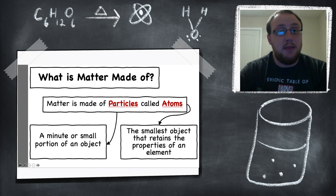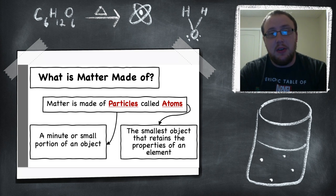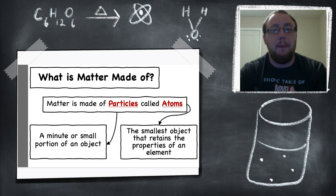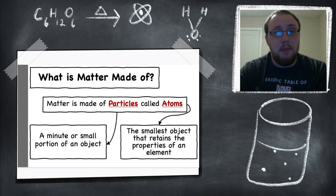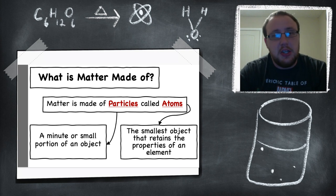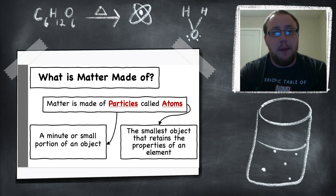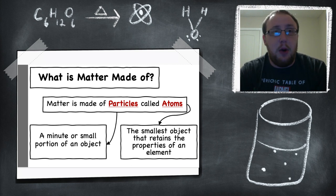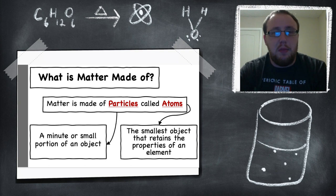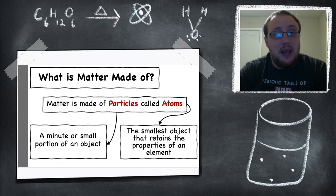In order to understand particle movement, we need to understand that matter itself, though it makes up everything, there is stuff that makes up matter. Matter is made up of particles called atoms. A particle is a minute or small portion of an object. So when I say a particle of gold, it's just a small portion of gold, or a particle of a pencil is just a piece of that pencil.